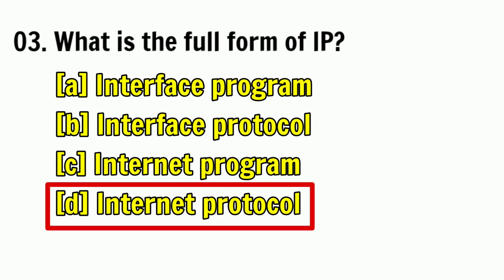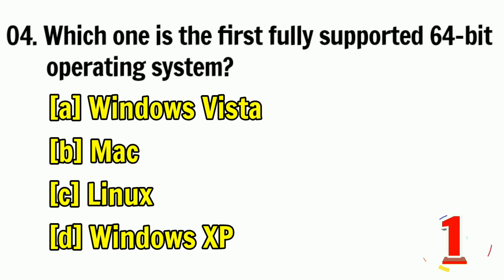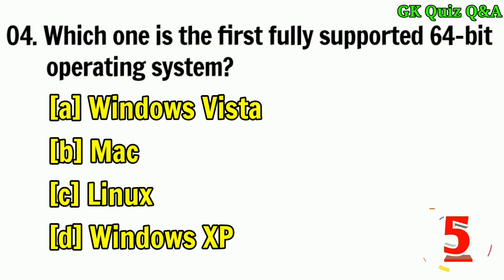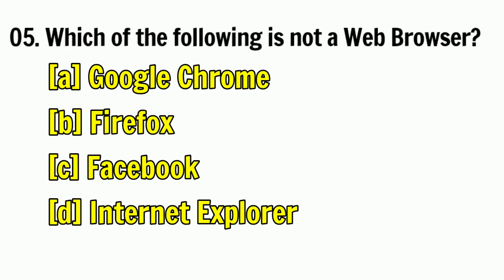Which one is the first fully supported 64-bit operating system? Answer: C — Linux. Which of the following is not a web browser?